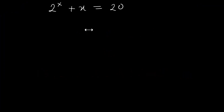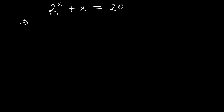In this video I'm going to provide a solution to this problem. We have 2 raised to X plus X equals 20. Let's start by keeping 2 raised to X on the left-hand side and sending X to the other side, so we have 20 minus X.